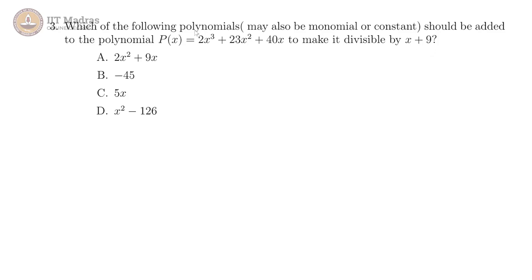We have this problem: which of the following polynomials should be added to the polynomial p(x) to make it divisible by x plus 9? We need to recognize that it is not necessary that there is only one polynomial that you add, because since it is only divisibility, we can add a number of polynomials to p(x) and make it divisible by x plus 9.